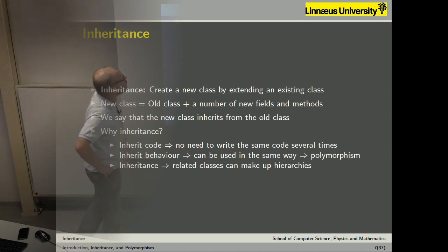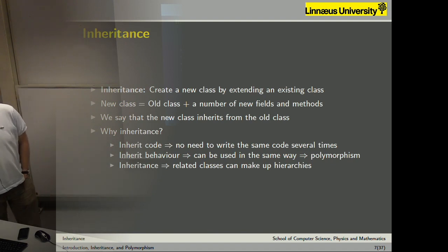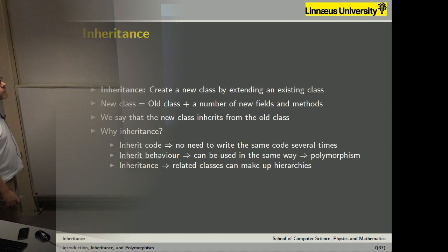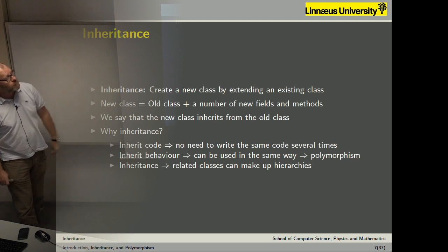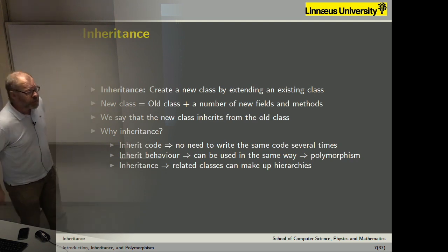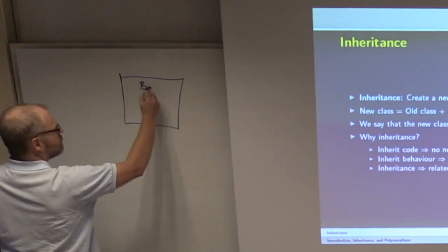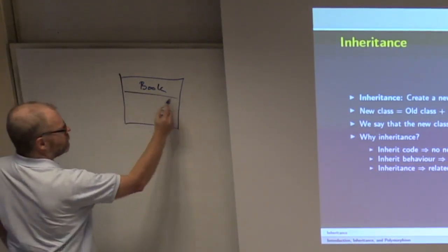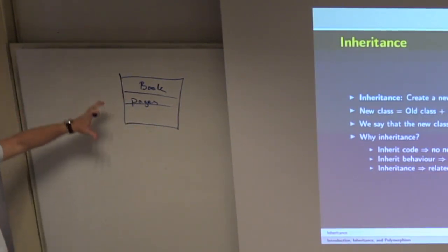Let's jump to the topic for today: inheritance. I think it is rather straightforward to learn how to start using it, but getting all the implications of it is somewhat more tricky. The basic idea is that we can create a new class by extending an existing class. I will show an example where we have a very simple class called Book — it contains properties, for example pages, and also a number of methods.